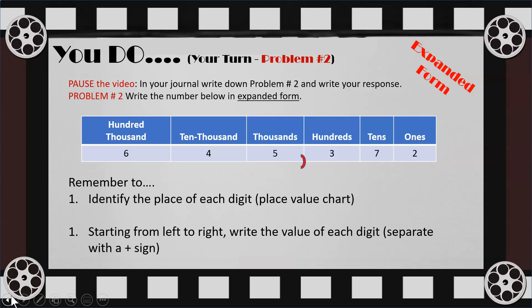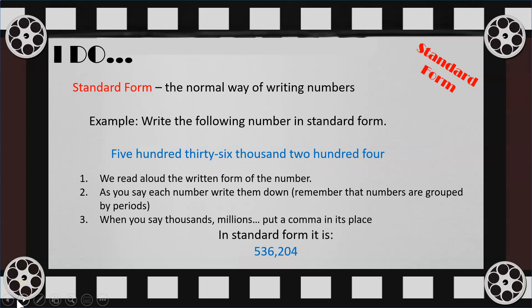Now it's your turn to try. Pause the video and write down problem number two in your journal. Write the number shown in expanded form, making use of the place value chart. Identify the place of each digit, then starting from left to right, write the value of each digit separated by a plus sign. We will check the answer at the end.